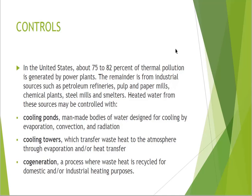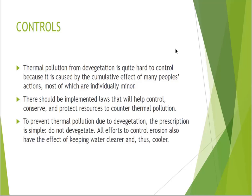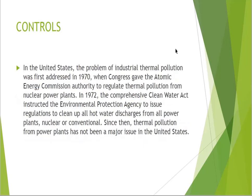In colder regions, heated water from industrial processes can be used to heat homes instead of burning fuels or using electrical equipment. Thermal pollution from de-vegetation is quite hard to control because it is caused by the cumulative effect of many people's individually minor actions. Laws should be implemented to help control, conserve, and protect resources to counter thermal pollution. To prevent thermal pollution due to de-vegetation, the prescription is simple: do not de-vegetate. All efforts to control erosion have the effect of keeping water clearer and thus cooler.